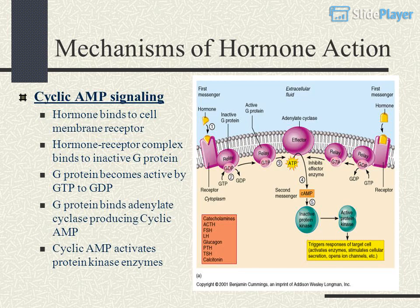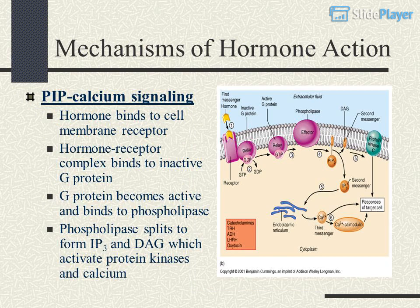Cyclic AMP Signaling: the hormone binds to a cell membrane receptor; the hormone-receptor complex binds to an inactive G-protein; the G-protein becomes active by binding GTP; the active G-protein binds adenylate cyclase, producing cyclic AMP; cyclic AMP then activates protein kinase enzymes.